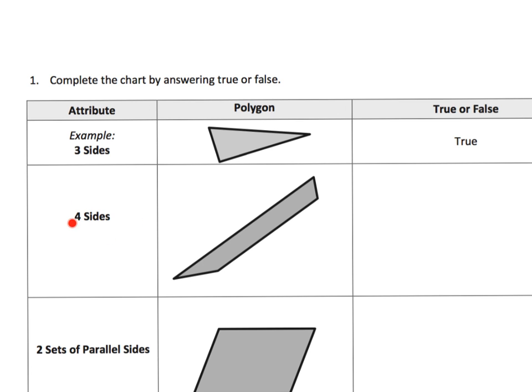For example here it says four sides. Does this polygon have four sides? And you say, well yeah, one, two, three, four. So it does have four sides so we would call this true.